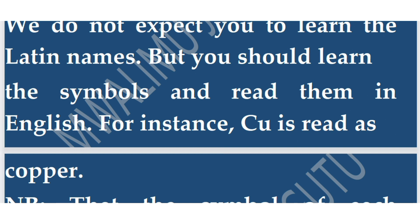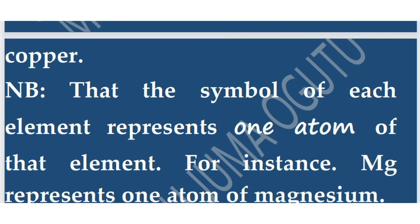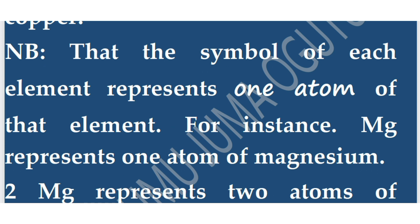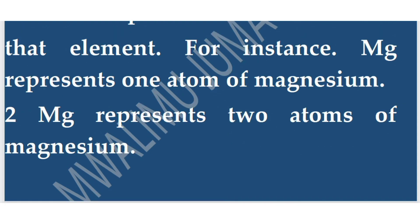The symbol of each element represents one atom of that element. For example, O represents one atom of oxygen, and Mg represents one atom of magnesium. When it is 2Mg, it represents two atoms of magnesium.